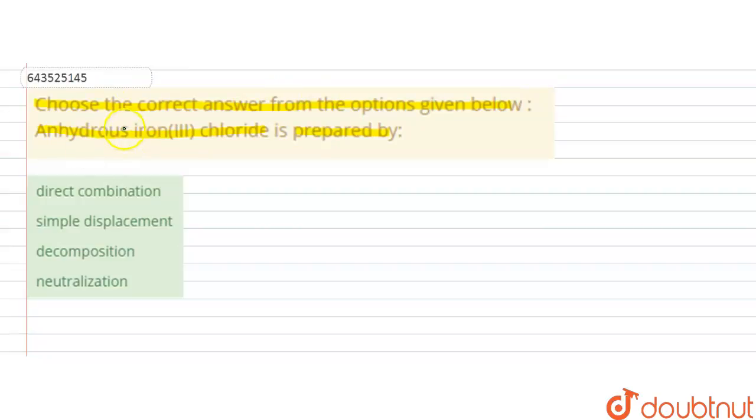So in this question, we have to find out how anhydrous iron(III) chloride is prepared. The given options are: direct combination, simple displacement, decomposition, and neutralization.